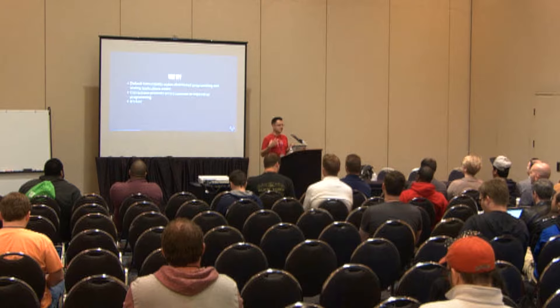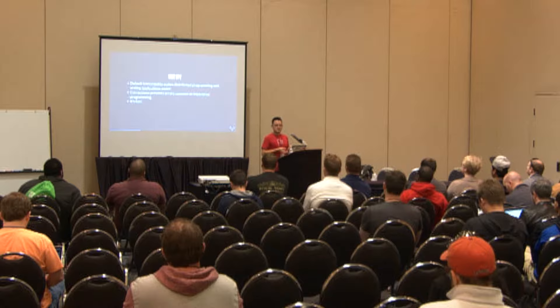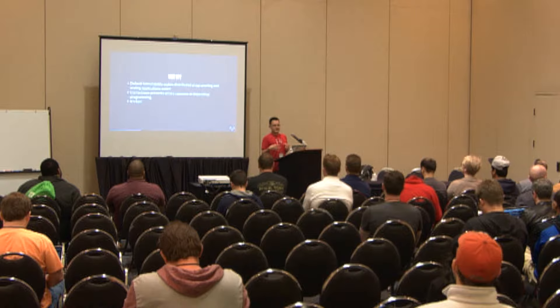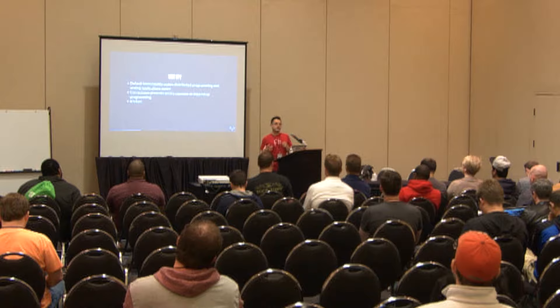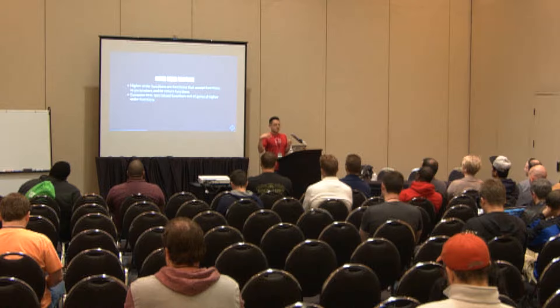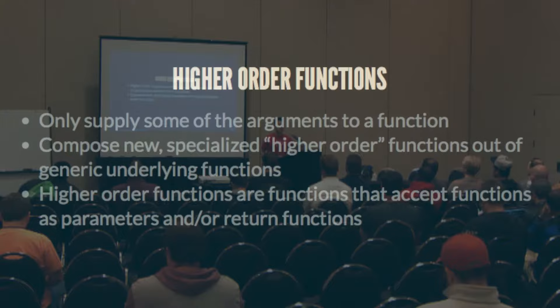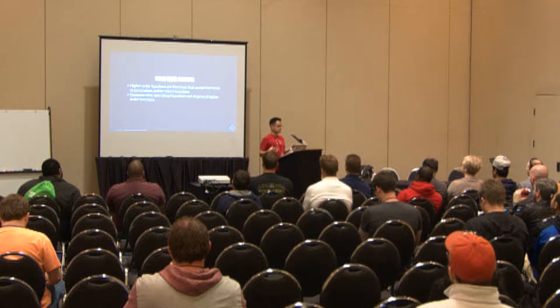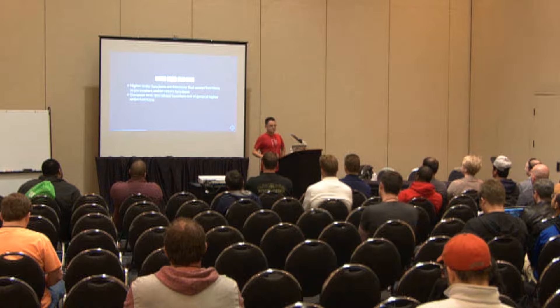Immutability is also important for distributed programming and concurrency — you don't have to worry about locking objects when working in a cluster or parallel. F# specifically is statically typed and has strong type inference, so you almost never need to explicitly declare types but the compiler still knows what's going on. That makes code faster to write and easier to read. Now let's talk about higher-order functions — who was in Timmy's talk this morning?